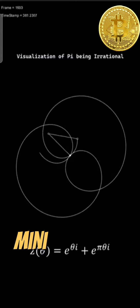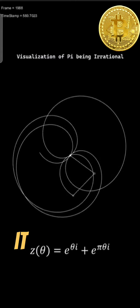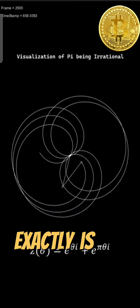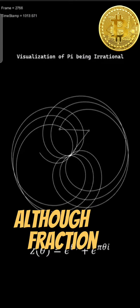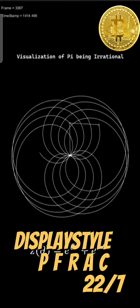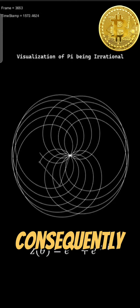The number pi appears in many formulae across mathematics and physics. It is an irrational number, meaning that it cannot be expressed exactly as a ratio of two integers, although fractions such as 22/7 are commonly used to approximate it.